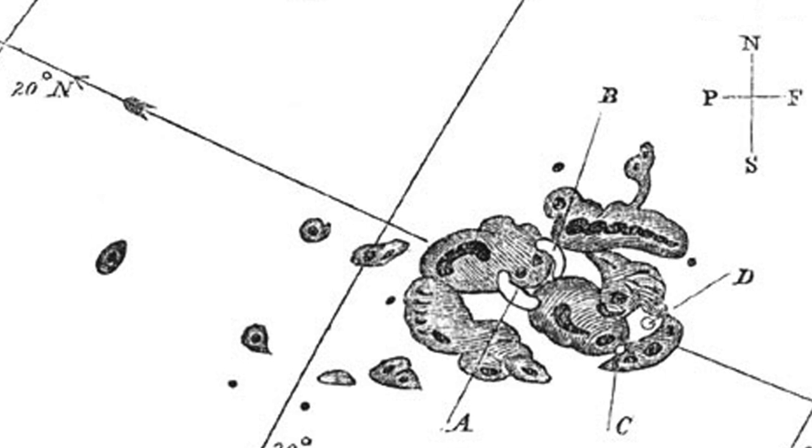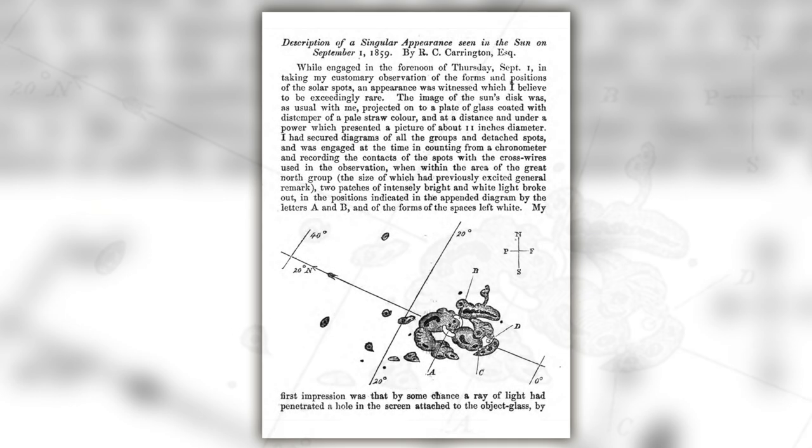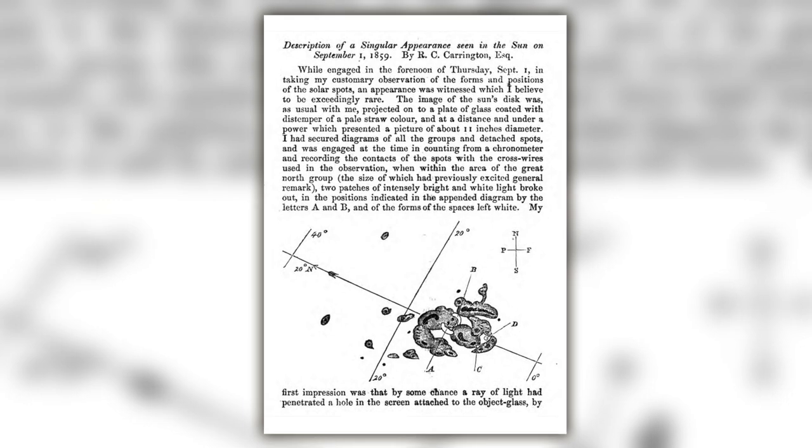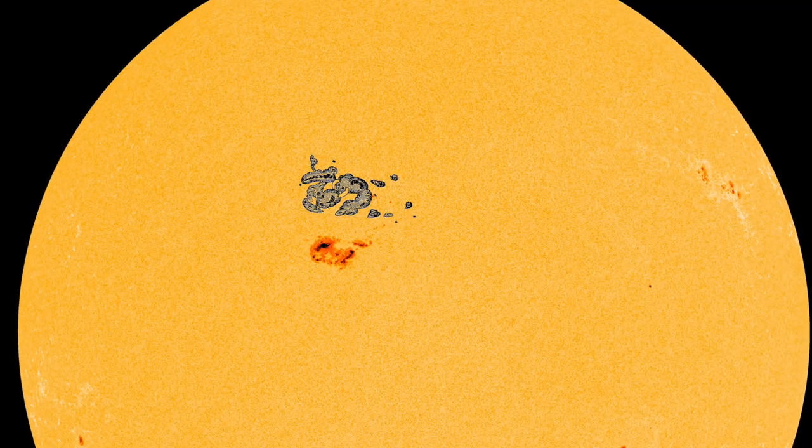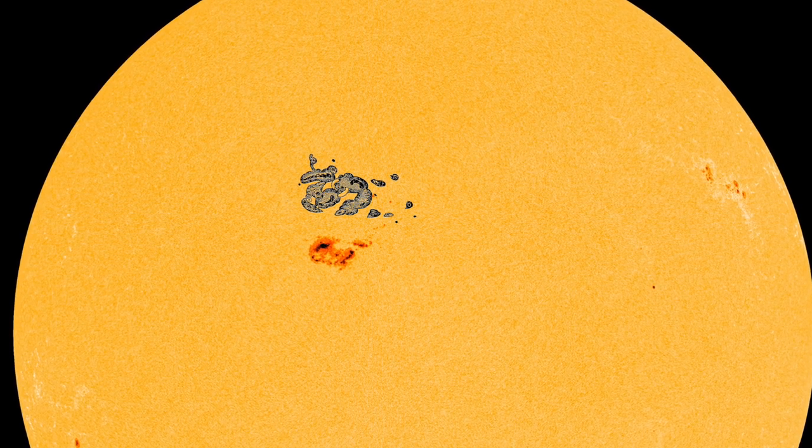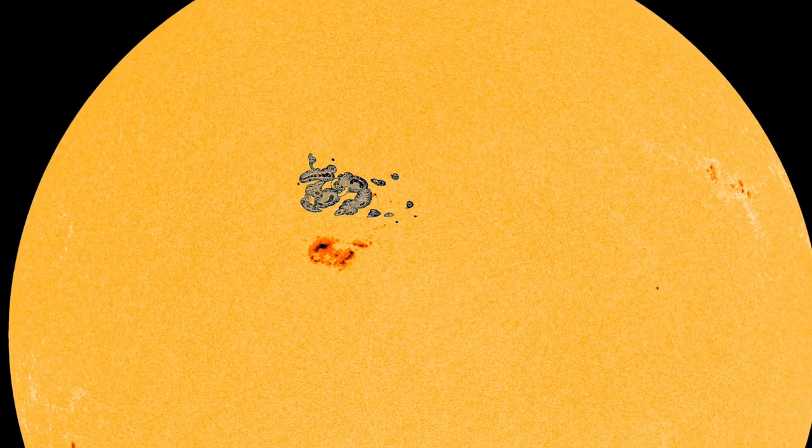Carrington did draw this diagram of the sunspot cluster, which was published in the monthly notices of the Royal Astronomical Society, and here it is to scale on the sun next to sunspot AA3354, which we've seen this week.